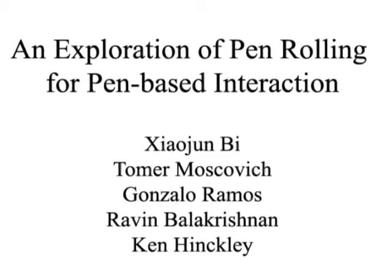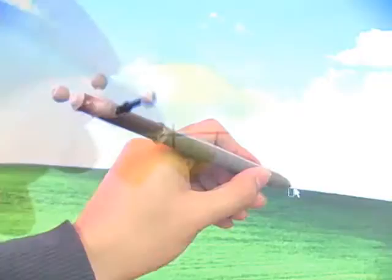In this video, we present Pen Rolling, the rotation of a pen around its longitudinal axis as a supporting input modality for pen-based interaction.